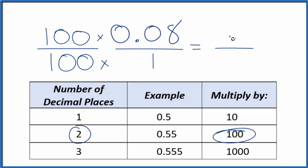So 100 times 0.08, that's 8. 100 times 1, that's 100. So we have 8 over 100. That's the fraction for the decimal 0.08.